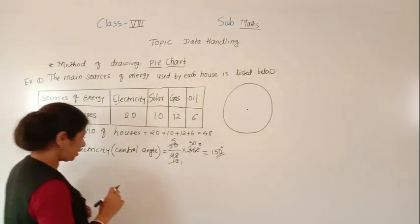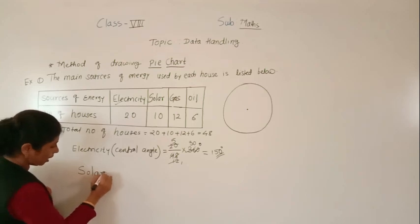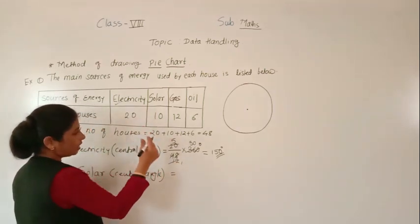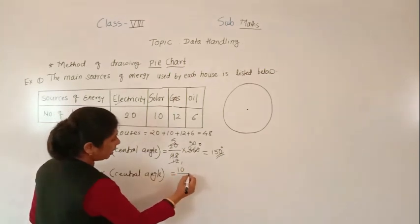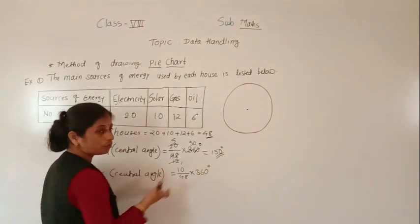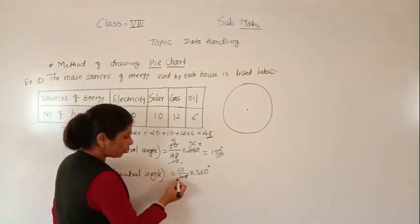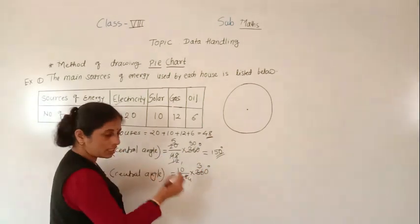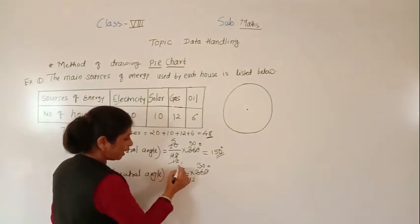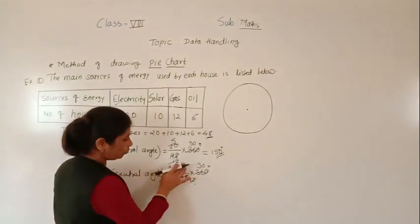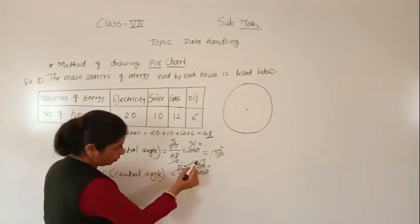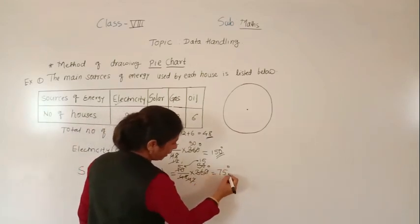For solar: 10/48 × 360. Simplifying: 12 fours are 48, 12 threes are 36, then 2 twos are 4, 2 fives are 10, giving 15 × 5 = 75 degrees. So the central angle for solar is 75 degrees.